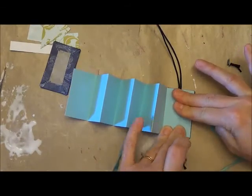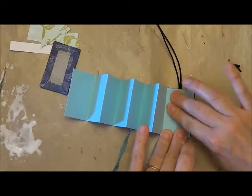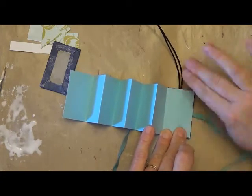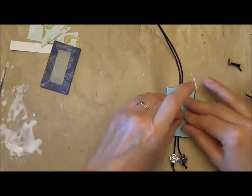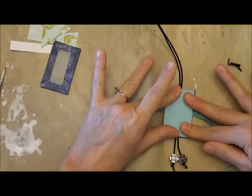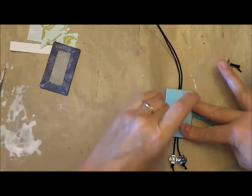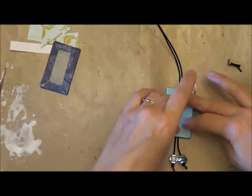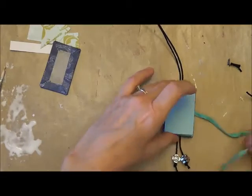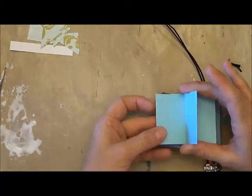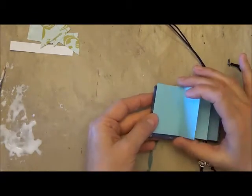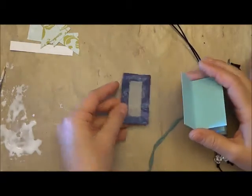Give it some good pressure because you want that to really stick. Then we can take the front part of our book and we're going to glue the first page of our booklet to our cover.